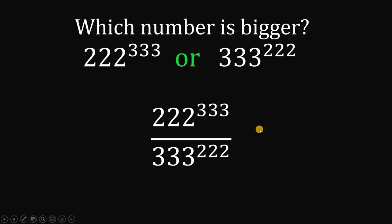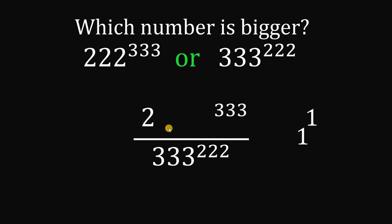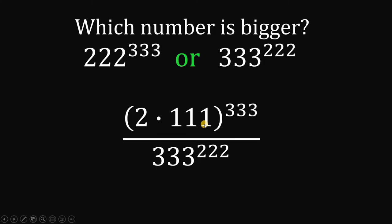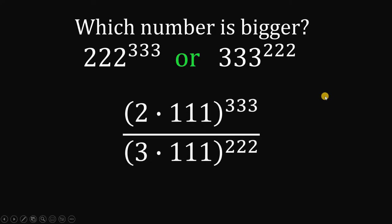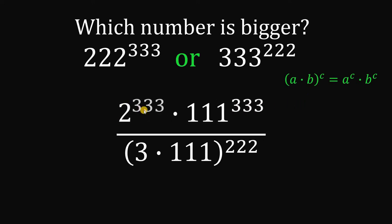First, let's simplify 222, which is equivalent to 2 times 111. And 333 can be factored as 3 times 111. Now, using the law of exponents — (a × b)^c = a^c × b^c — the numerator can be written as 2 raised to 333 times 111 raised to 333.